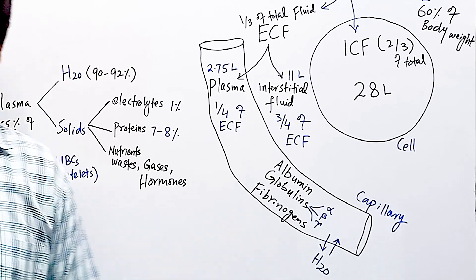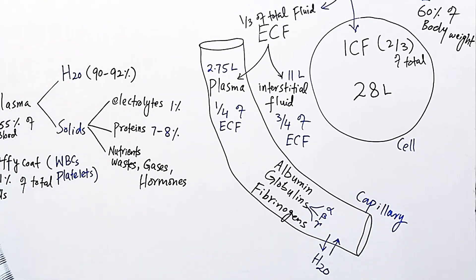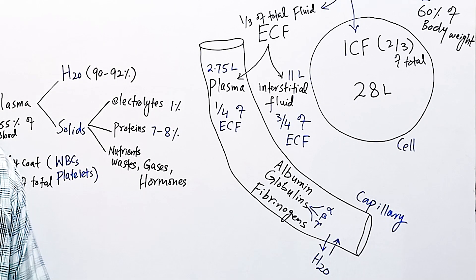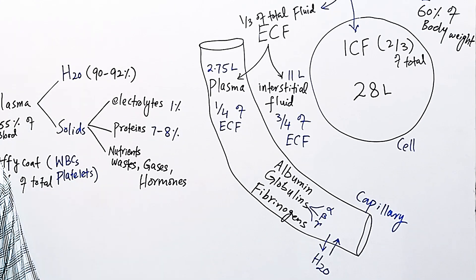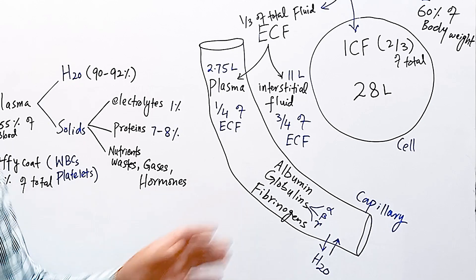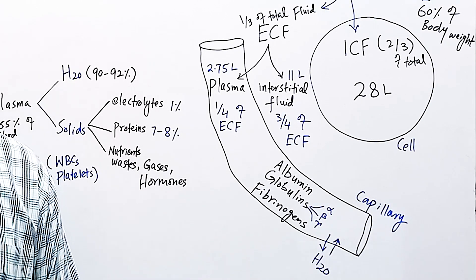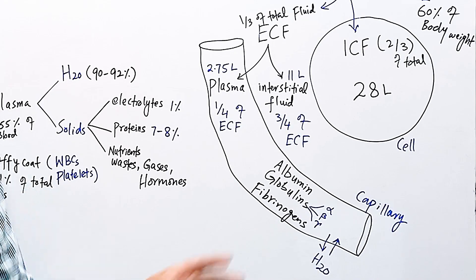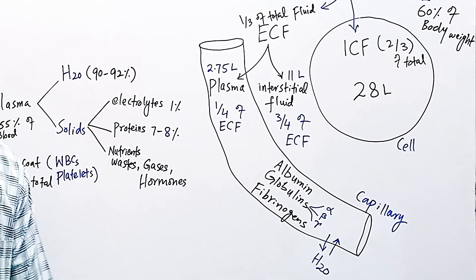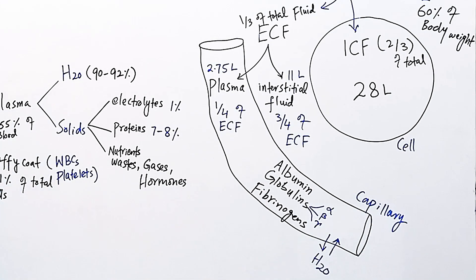Fibrinogen, also called clotting factor number one, is just five percent of total plasma proteins, their concentration is about 300 milligrams per deciliter, molecular weight is 330,000, and they are synthesized by liver. So in liver failure, the concentration of fibrinogen will decrease and there will be risk of bleeding.